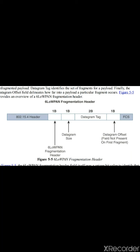The next concept is fragmentation. The maximum transmission unit for an IPv6 network must be at least 1280 bytes. The MTU defines the size of the largest protocol data unit that can be passed over a network. IEEE 802.15.4 has an MTU of only 127 bytes. Comparing both, there is a huge difference — 1280 bytes versus 127 bytes — meaning IPv6 with its much larger MTU must be carried over a network with a smaller one.